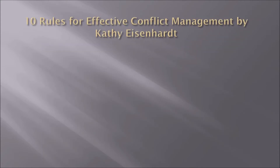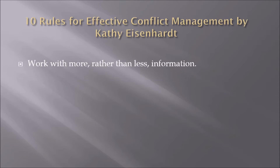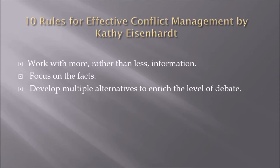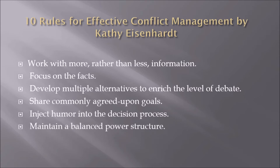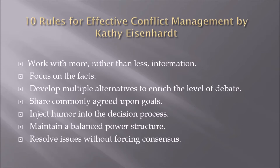Ten rules for effective conflict management by Kathy Eisenhardt: work with more rather than less information; focus on the facts; develop multiple alternatives to enrich the level of debate; share commonly agreed upon goals; inject humor into the decision process; maintain a balanced power structure; and resolve issues without forcing consensus.